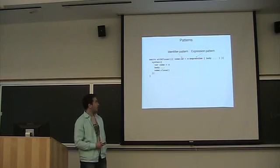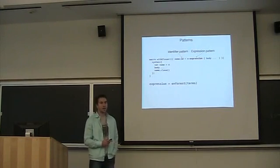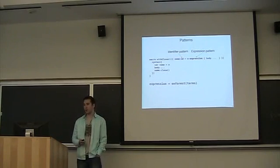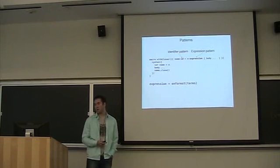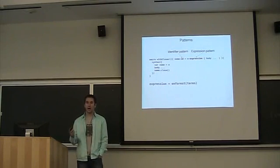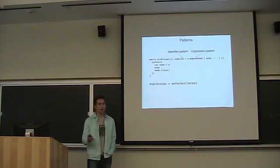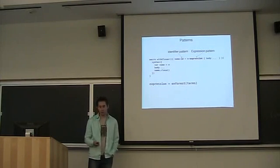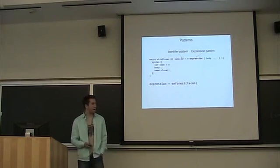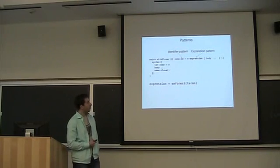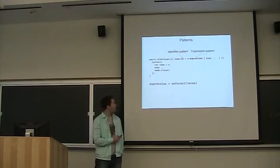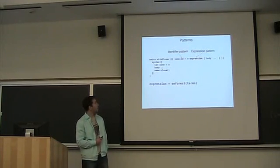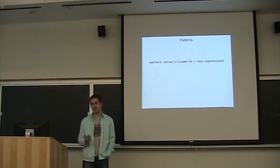And so the ID matches an identifier, but expression is special in that it actually calls enforce on the current set of unparsed terms. And this is a key to making the macro system composable because you can put macros in the arguments to other macros, and those macros will be expanded for you by using the expression pattern class. And also note that body doesn't have a pattern class on it because we don't want to parse it too early, because if you do, then this binding won't be available for the parts of the body.